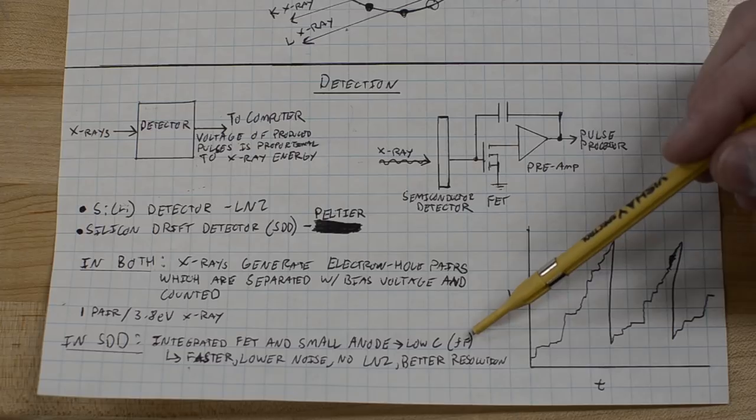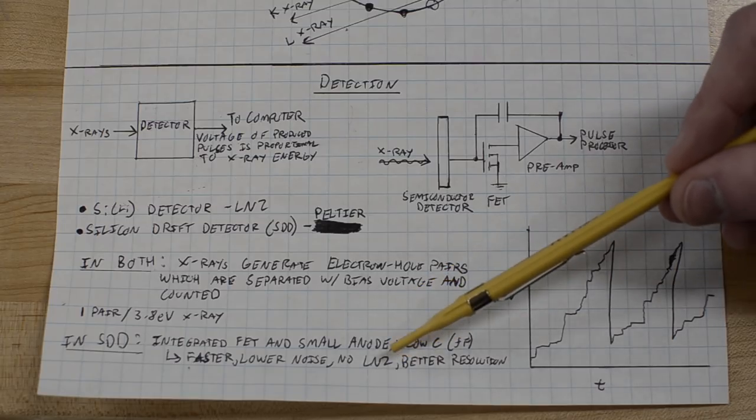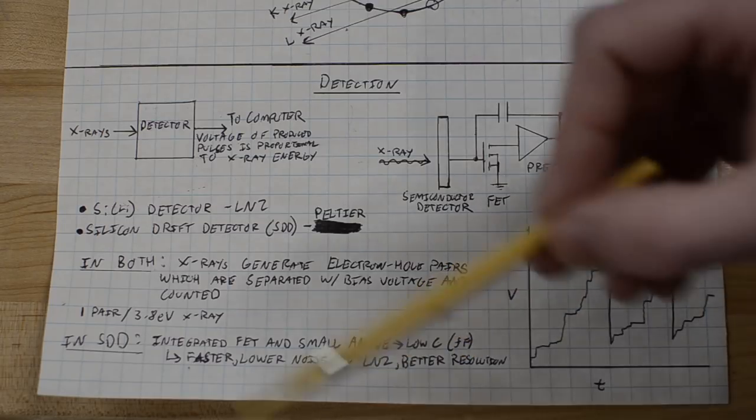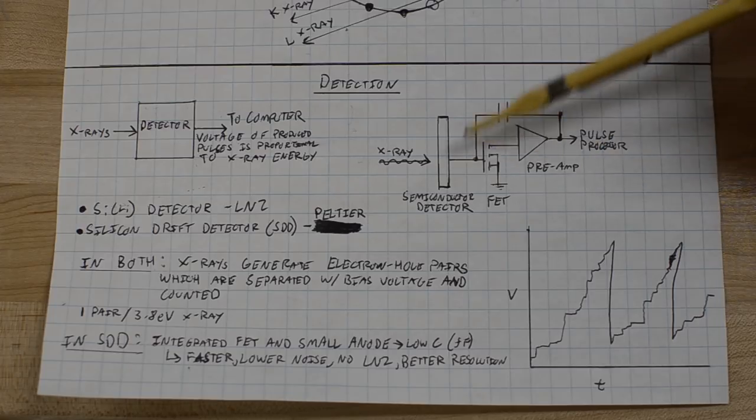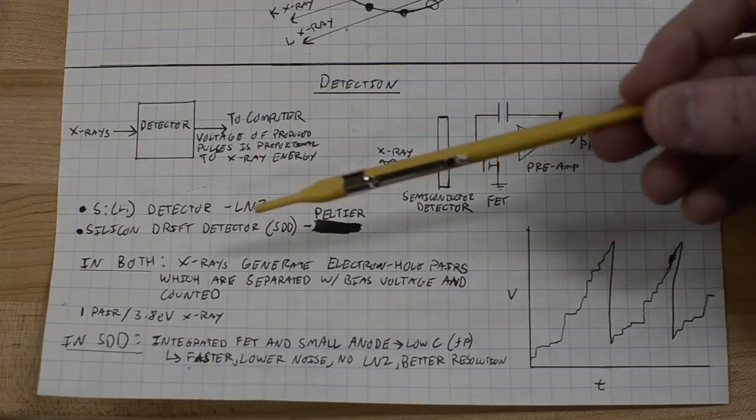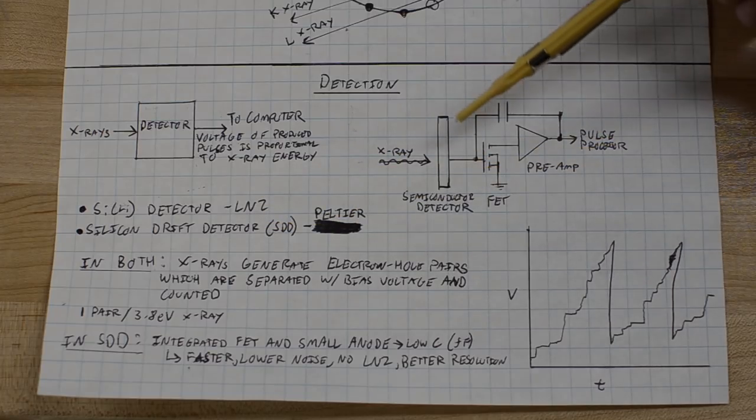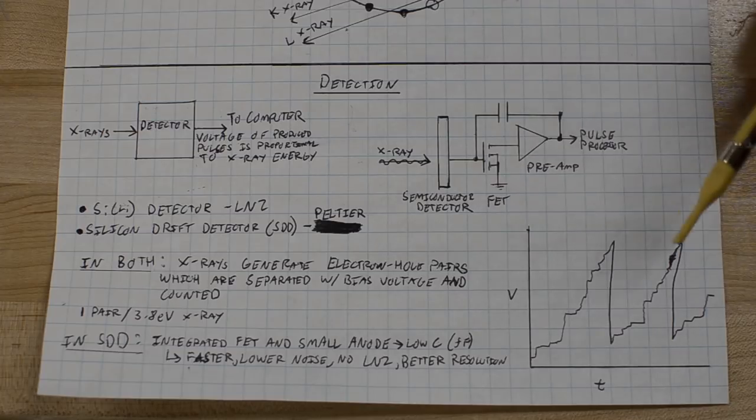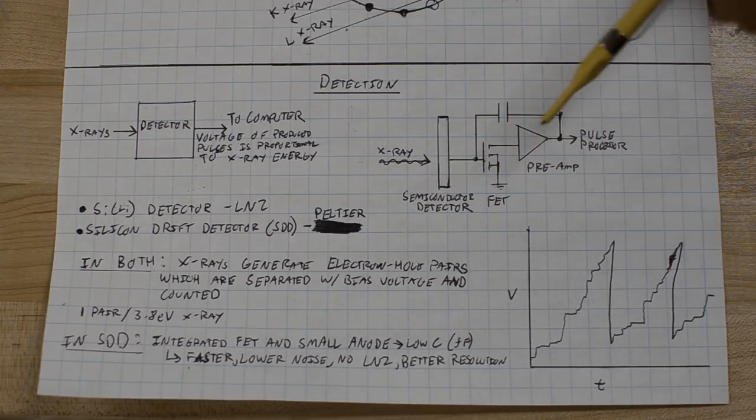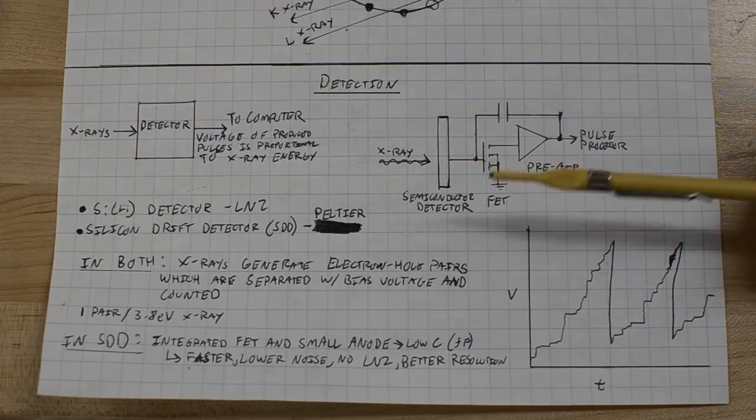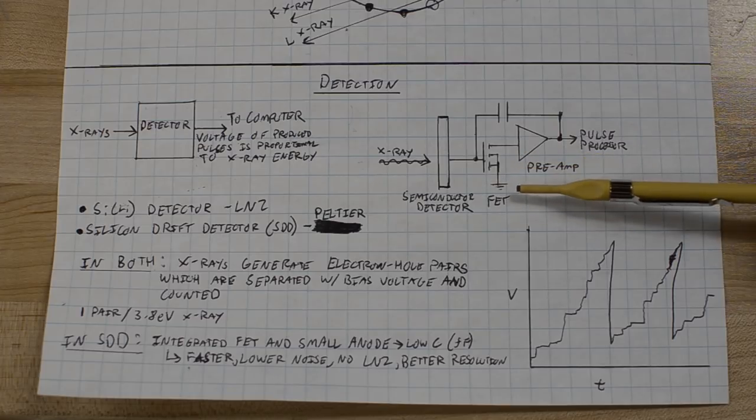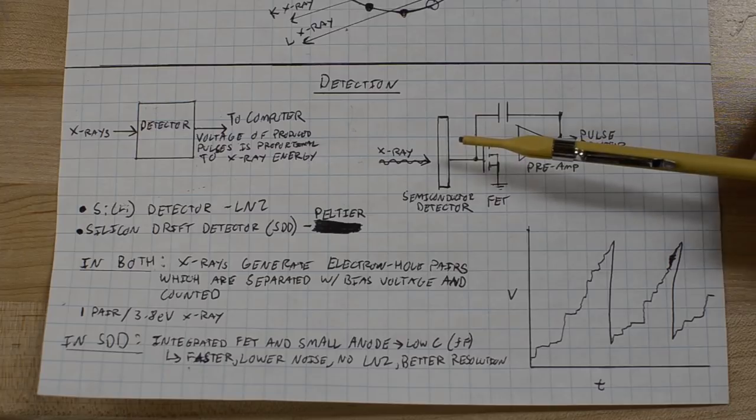That smaller collection site allows you to have a much smaller device capacitance overall. This is in the range of maybe 50 to 100 femtofarads. And that leads you to better performance, lower noise, faster detection, you don't need the liquid nitrogen cooling, and better resolution. Overall, it's just a nicer detector. The electronics outside of the semiconductor detector are basically the same. The x-rays hit the detector, and the detector gives off pulses for each individual x-ray event. We're actually counting individual pulses here.